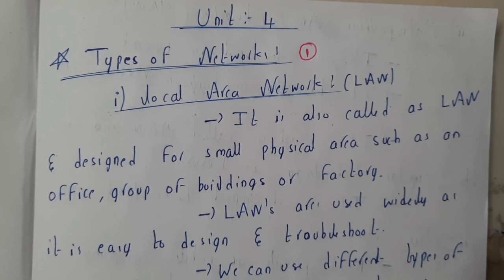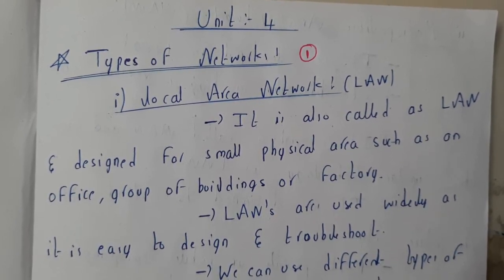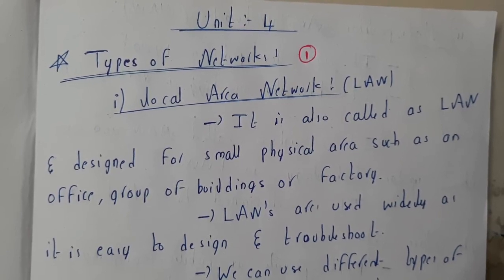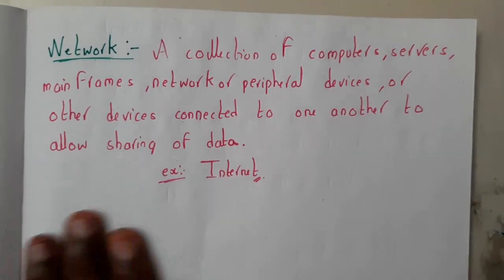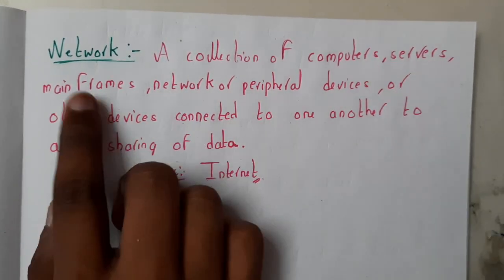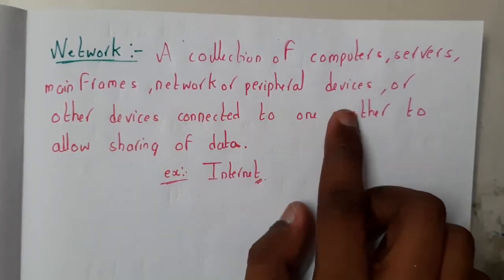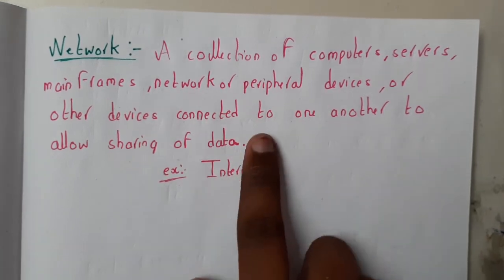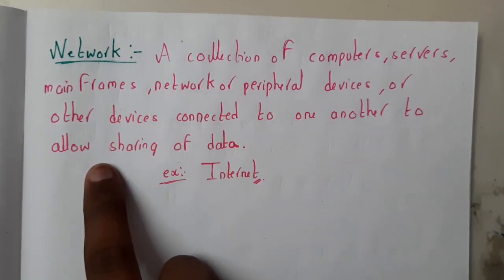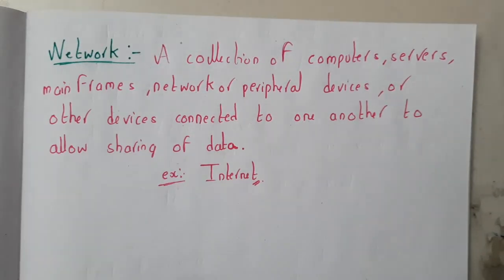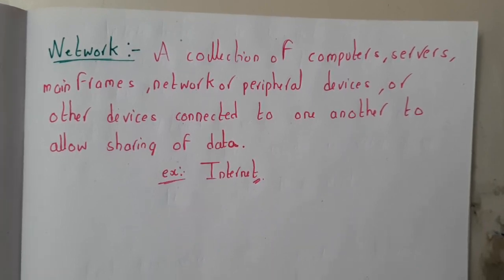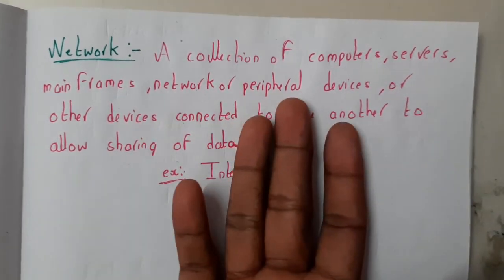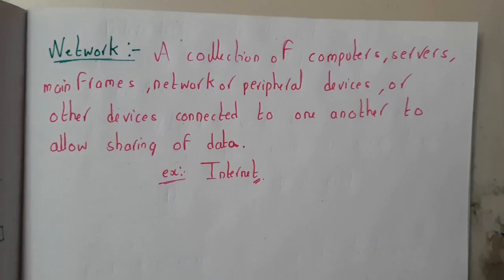In this lecture, let us go through types of networks. First we need to learn what is a network. A network is a collection of computers, servers, mainframes, peripheral devices, or any other devices connected to one another to allow sharing of data. In simple words, a network is a connection between two or more computers or devices.